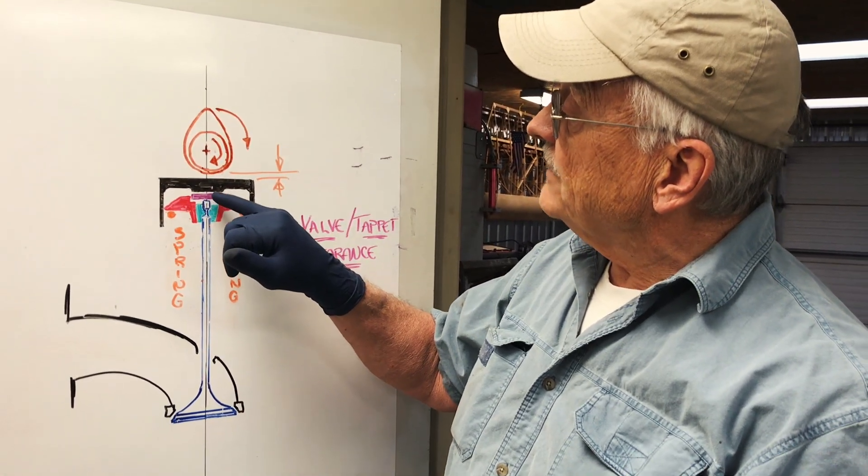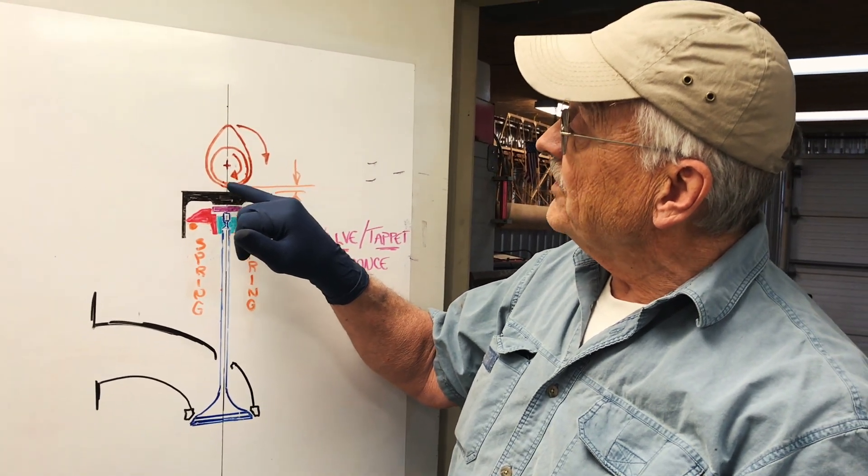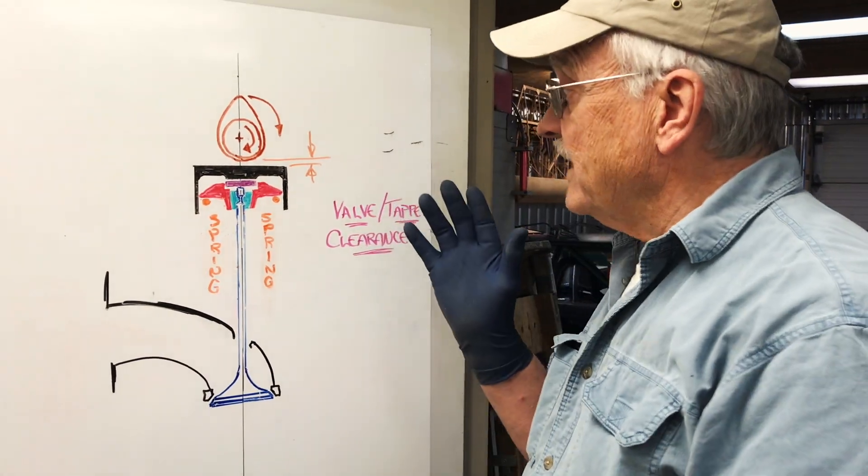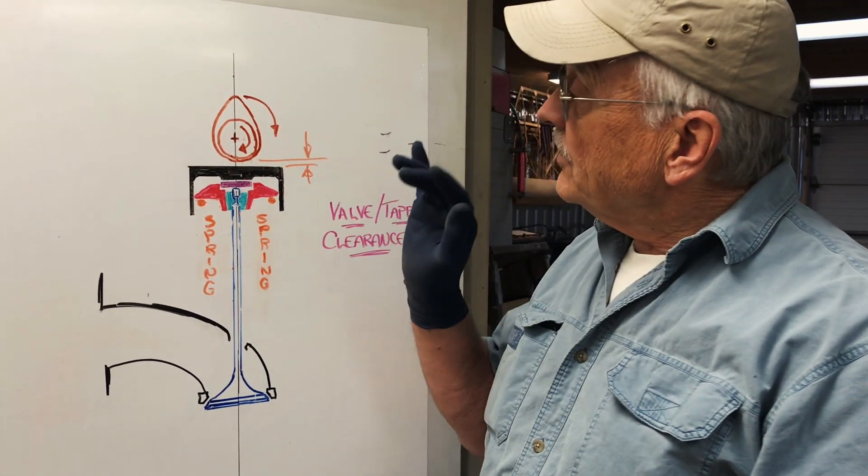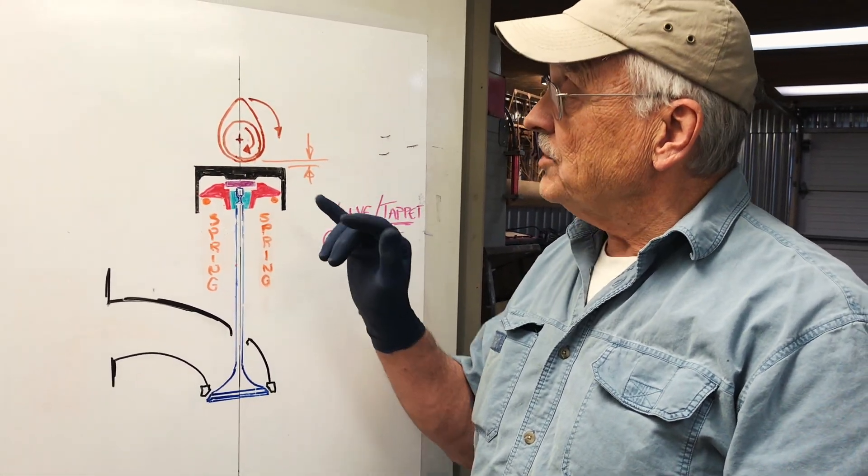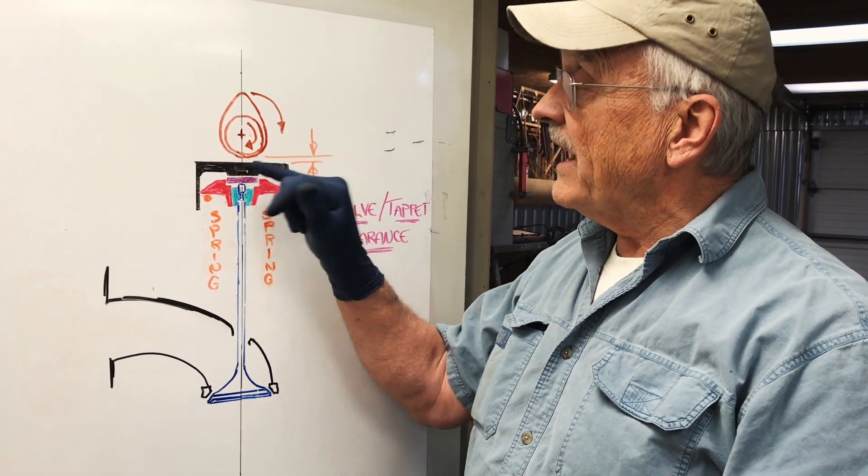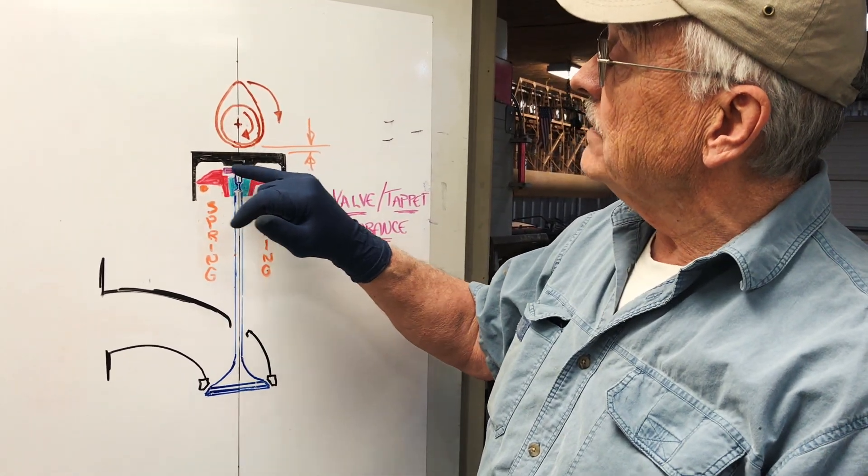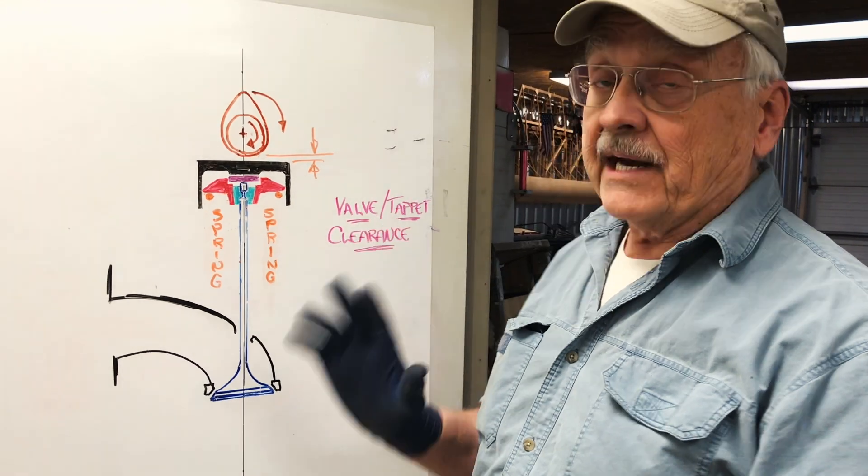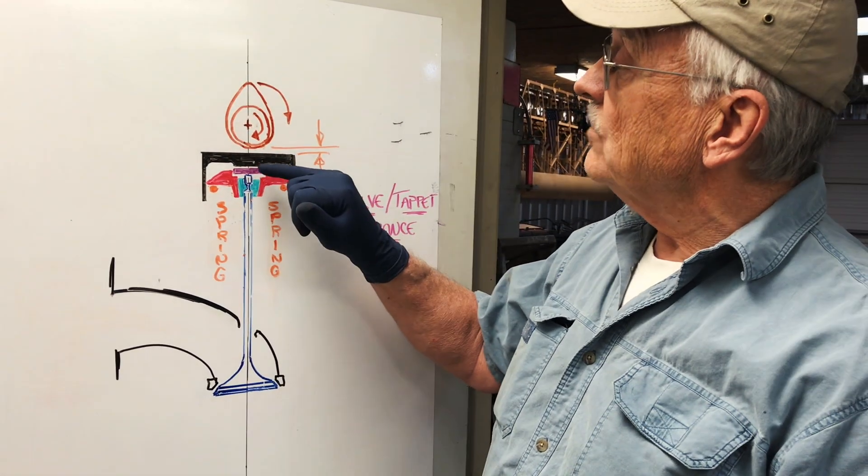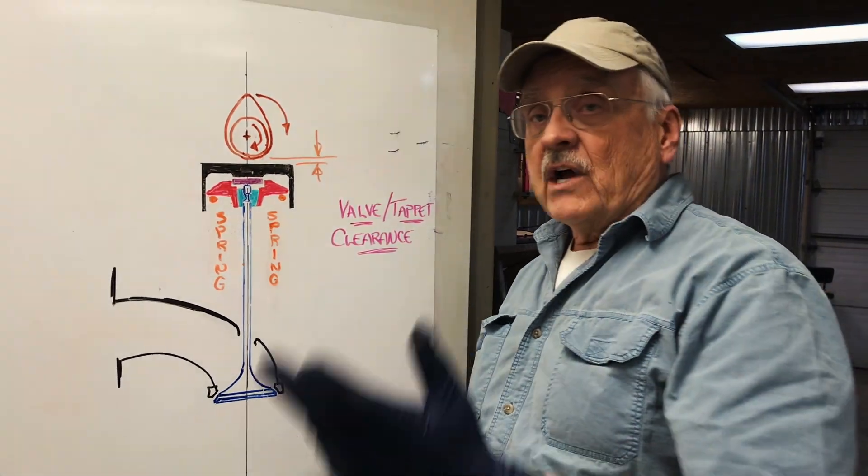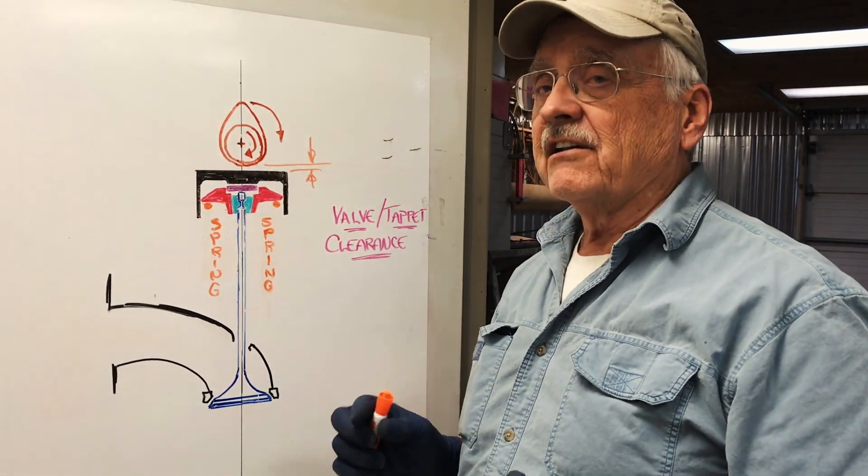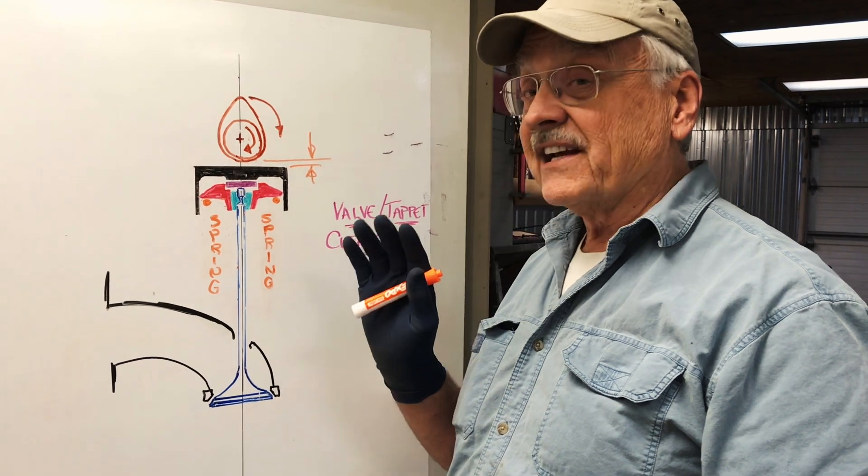What that means is this valve pushes on the shim, the shim pushes on the tappet, and this gap—this clearance—closes. That's got to be, I think, between 10 and 14 thousandths of an inch. Somehow you've got to increase that clearance back to its original. What the manufacturer does is provide shims of different thickness. It's not a problem—you've just got to figure out what dimension shim you need, send away for them, put them in, you've got your correct clearance. The problem is there's only about a 25 thousandths of an inch range from the thickest to the thinnest shim.